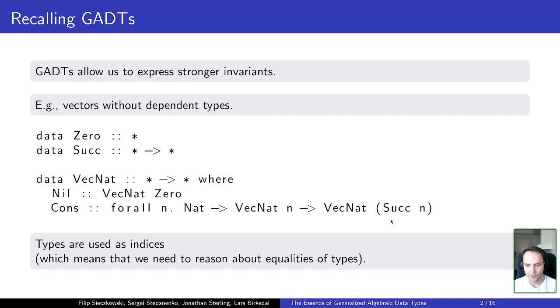So here we use types as indices and it gives us an intuition that probably we will need to reason about equalities of those indices, so equalities of types.